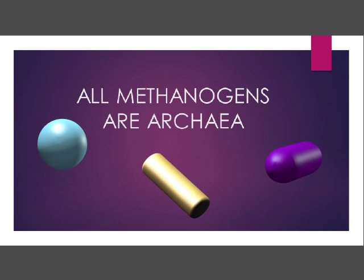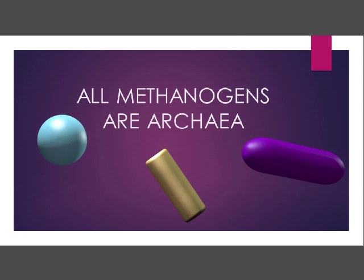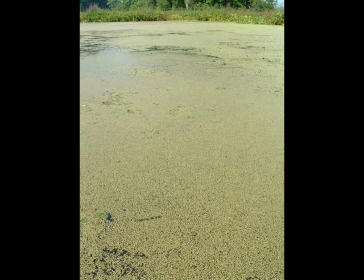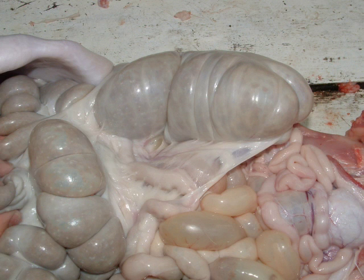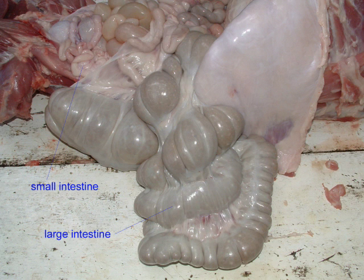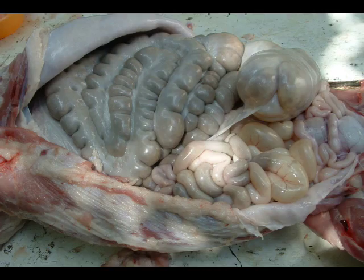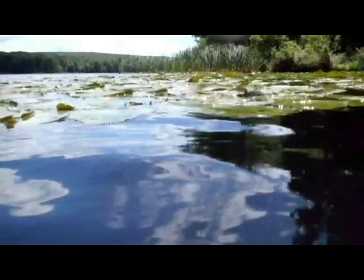These methanogens are very common in anaerobic environments such as the mud of swamps, the intestines of animals ranging from humans to ruminants such as cattle, and other environments such as sediments under the ocean floor. These methanogens are very sensitive to oxygen and cannot survive where oxygen is present.